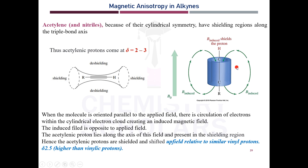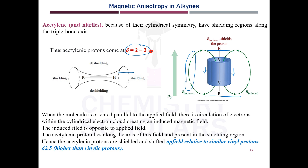For alkynes, they are linear in nature and the pi electron cloud above and below forms a cylindrical symmetry. All protons along the axis of the alkyne are in the shielded region because the induced field is in the opposite direction along the axis. That is why alkyne protons are comparatively upfield even though there is a pi electron cloud. Acetylene protons and nitrile protons appear around 2 to 3 ppm, which is upfield relative to vinyl protons at 5 to 6 ppm.